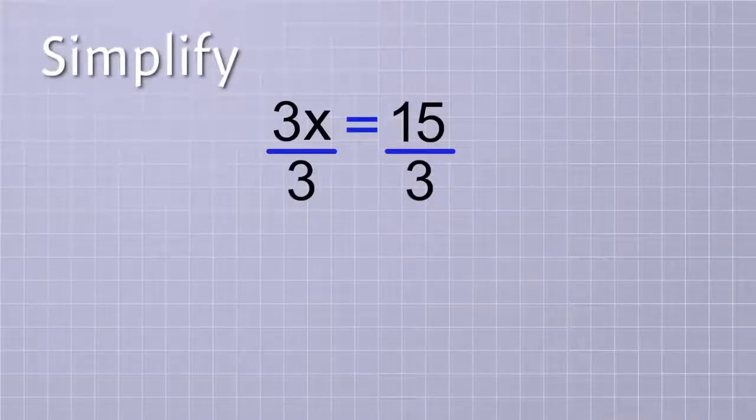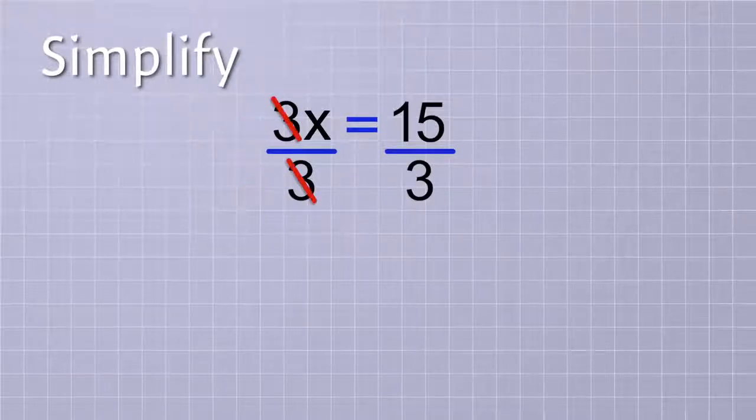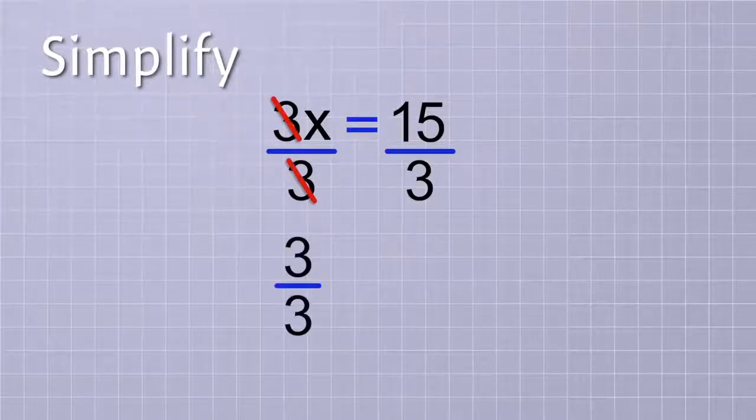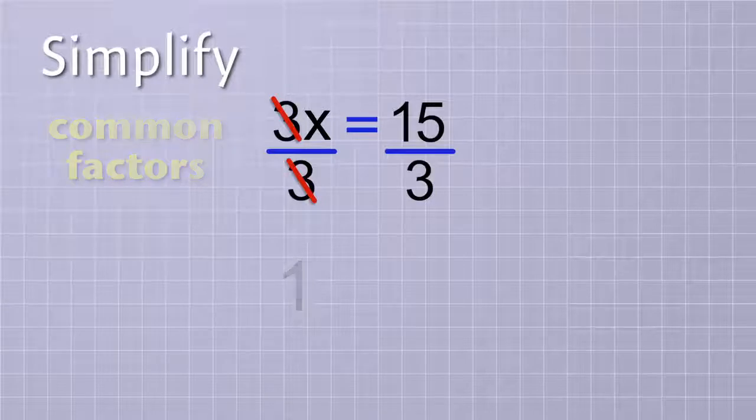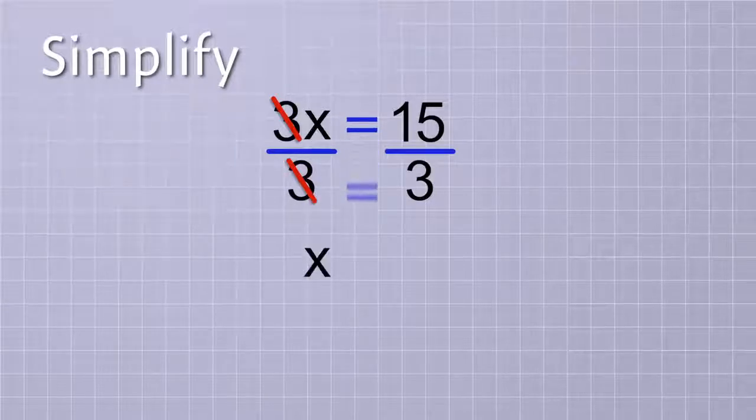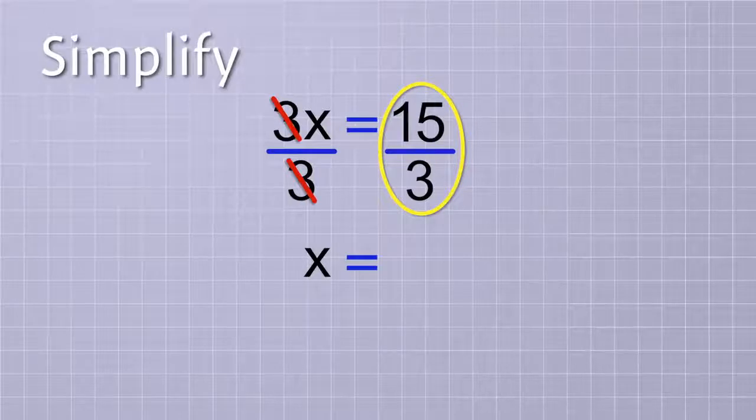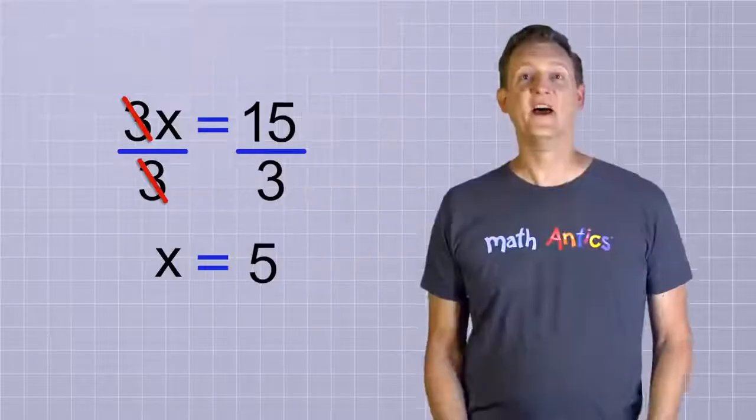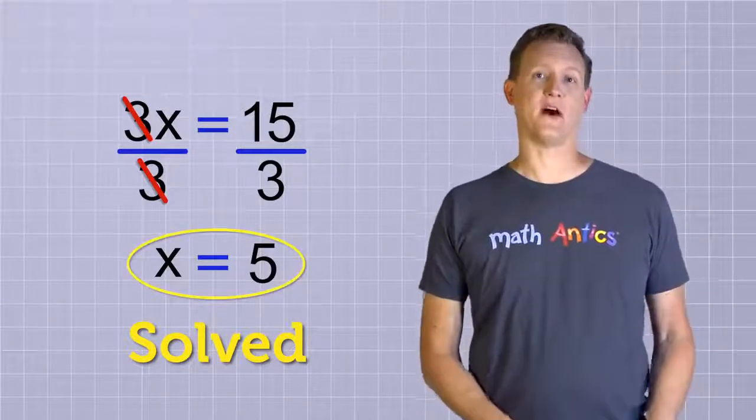The next step is to simplify. The 3 on the top and the 3 on the bottom on this side cancel, because 3 divided by 3 would just be 1. This is just like canceling common factors when you're simplifying a fraction. That leaves us with just x on this side. And on the other side, we have 15 divided by 3, which simplifies to 5. We've solved our equation by changing it into the simplified form, x equals 5.